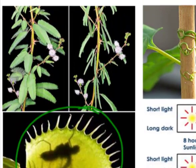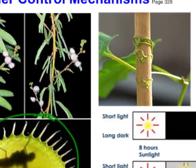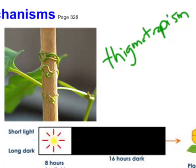Another interesting example is Mimosa pudica, called the touch fern. If you touch your finger on one of the leaves, the leaves will fold up — they respond to your touch, and they do it quite quickly. You'd be amazed when you see this — another example of thigmotropism at work.